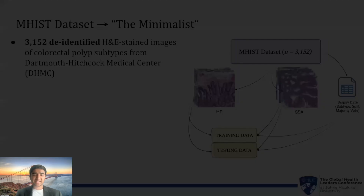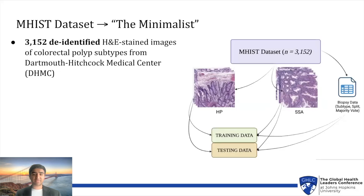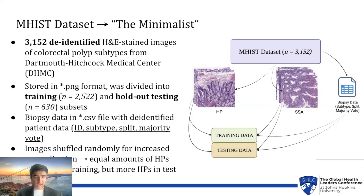For my research, I utilized the MHIS dataset from the Dartmouth-Hitchcock Medical Center, comprising 3,152 de-identified H&E stained images of colorectal polyp subtypes. Despite the dataset's smaller size compared to typical requirements, I divided it into training and testing sets, with each image associated with a subtype label stored in a biopsy file. To ensure generalizability, I also implemented random shuffling of the images in my dataset.